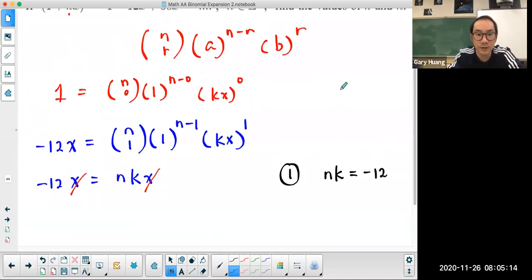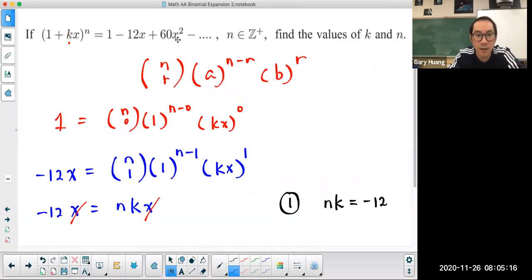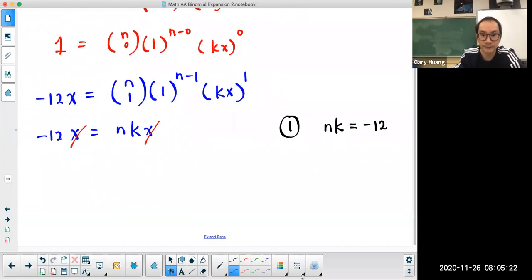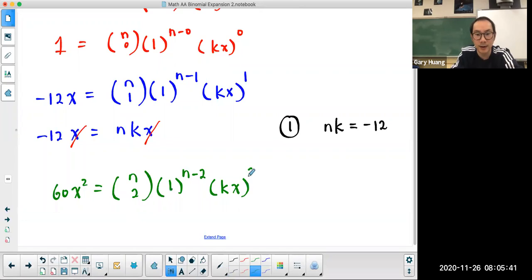Now we're going to do the same thing for the third term. The third term is 60x squared. And this time is going to equal to n choose 2 times 1 to the power of n minus 2, and kx to the power of 2.